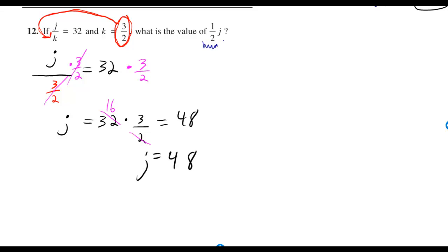But remember, they want 1 half j. So that means we're going to need to multiply the 48 by 1 half. And if you do that, you get 24.